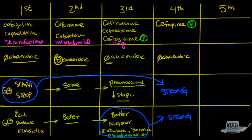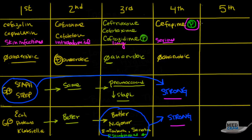Cefepime is outstanding. We use it for very serious infections anywhere — strong gram-positive, strong gram-negative, and as an extra bonus it covers pseudomonas. Think of immunocompromised patients or fever of unknown origin. This fourth generation cephalosporin has excellent, excellent coverage.